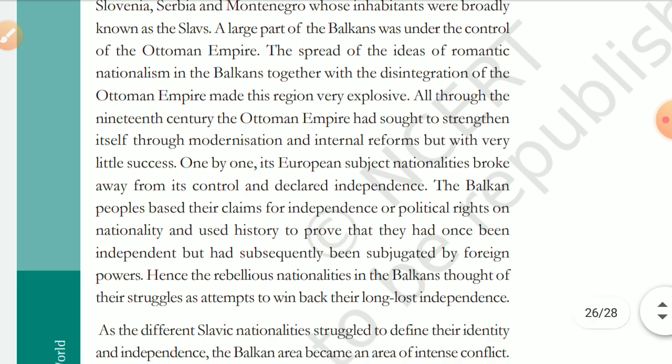All through the 19th century, the Ottoman Empire had sought to strengthen itself through modernization and internal reforms — trying to change administration and modernize. They tried to build up the Ottoman Empire but with very little success. One by one, its European subject nationalists broke away from its control and declared independence.